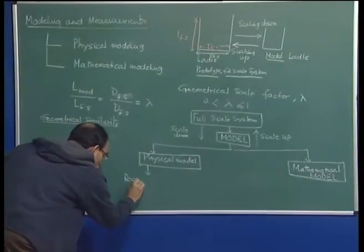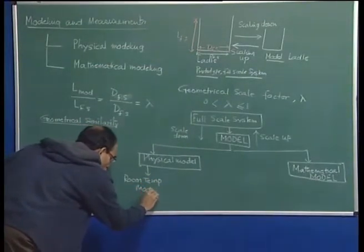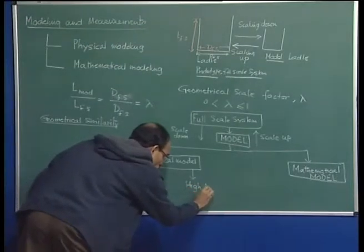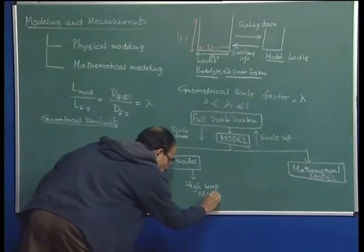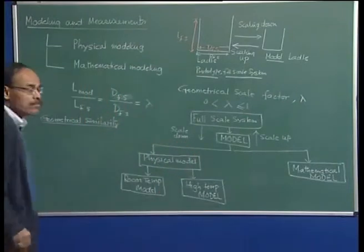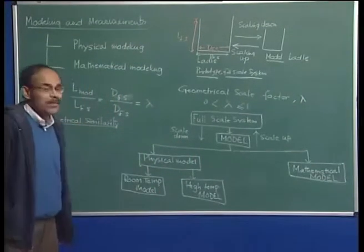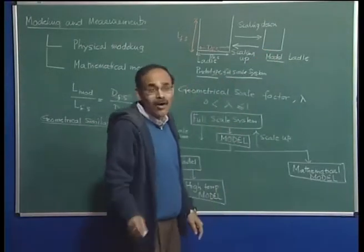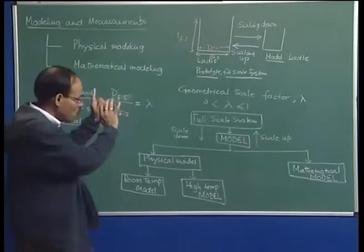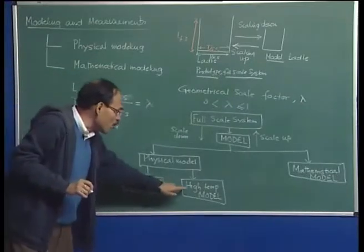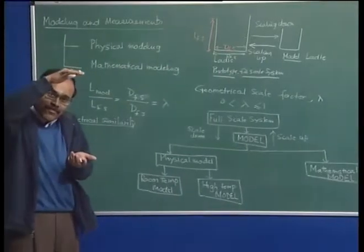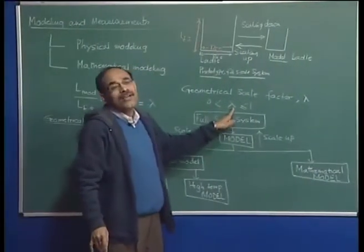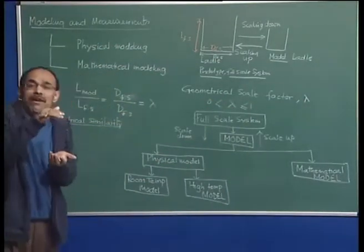Going back to physical and mathematical modeling — we have the full-scale system, we get the model, we have scale down and scale up. We can have a physical model and we can have a mathematical model. The physical model can be a room-temperature model or a high-temperature model. In a room-temperature model, I can operate the ladle made in the laboratory with mercury or with water.